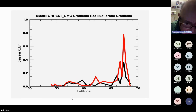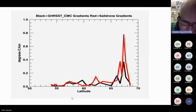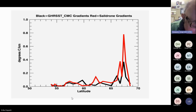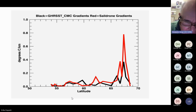For the CMC product, there is generally a good correlation along the SAIL drone track. These are gradients measured in degrees Kelvin or degrees C per kilometer.